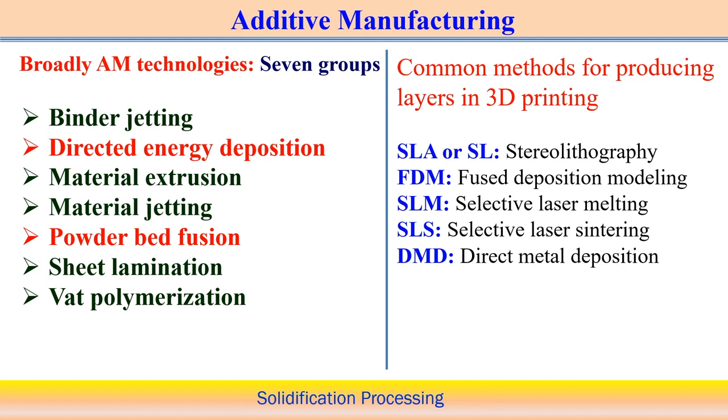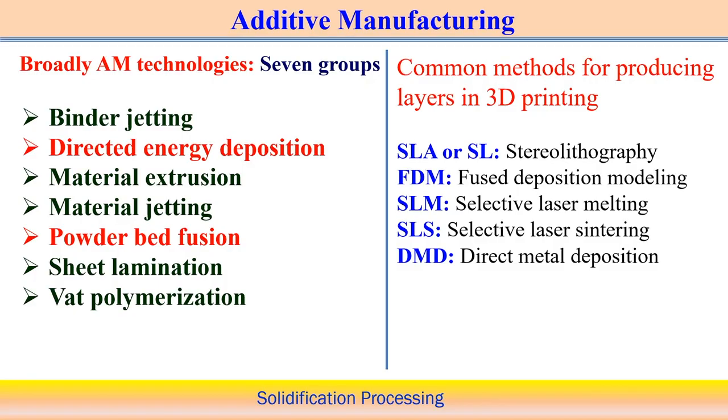The most common methods for producing layers in 3D printing include stereolithography (SLA), which is a very old process not applicable for metallic materials, fused deposition modeling, selective laser melting, selective laser sintering, and direct metal deposition. In this course, we will discuss selective laser melting and direct metal deposition as the two processes to understand solidification behavior.